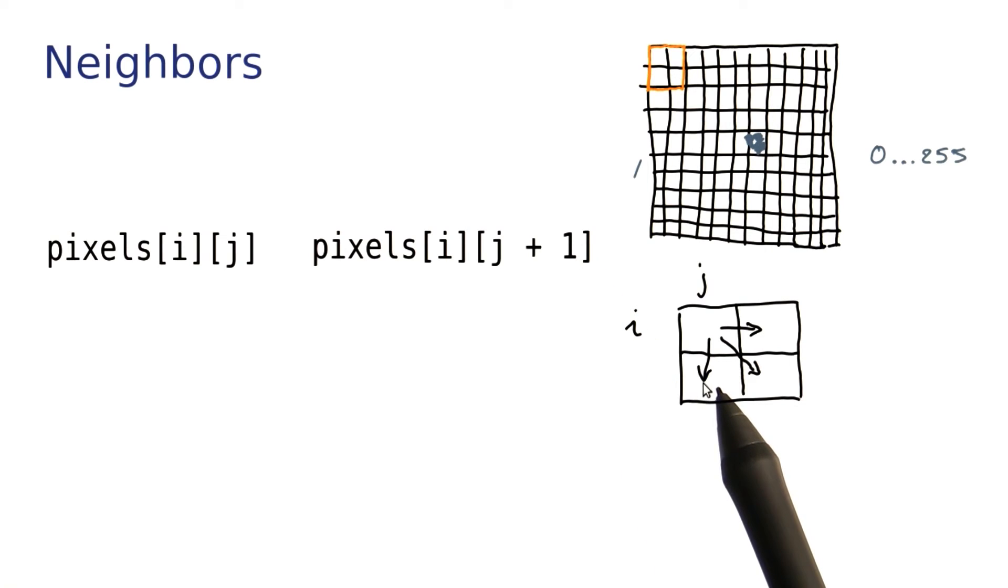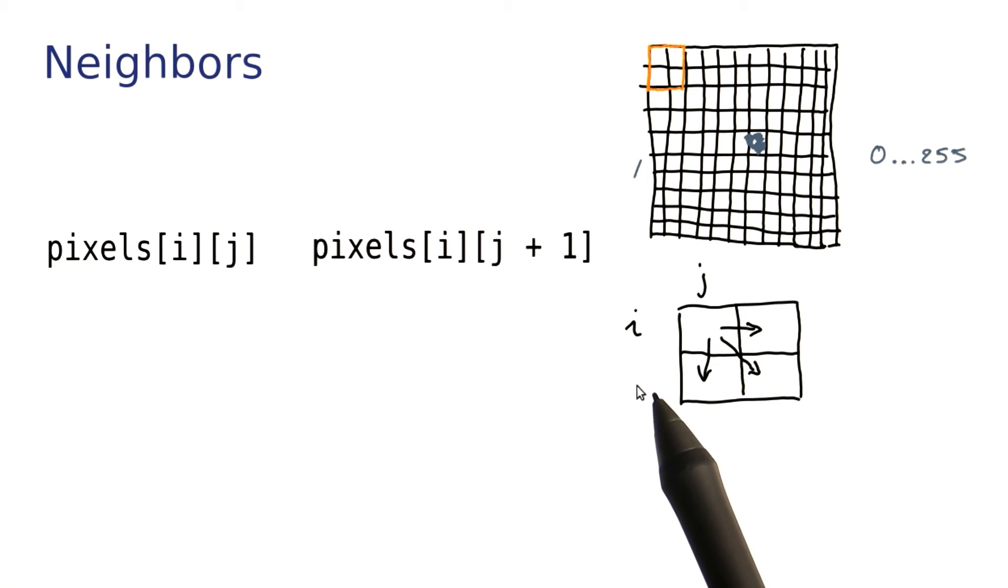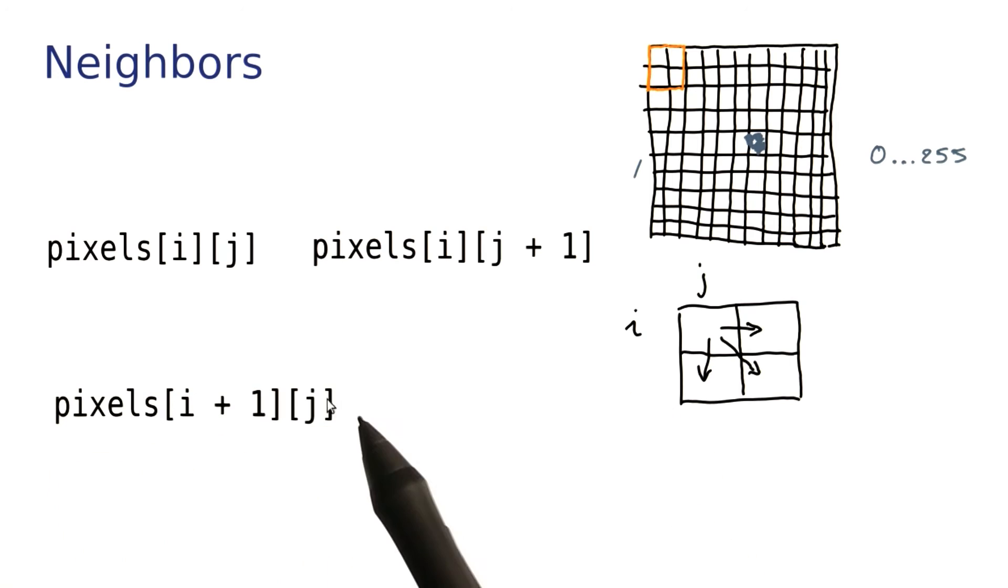What about the one to the south? In this case, the column index j is the same, and the row index has increased by 1. So here's the Java code for that.